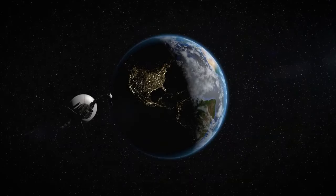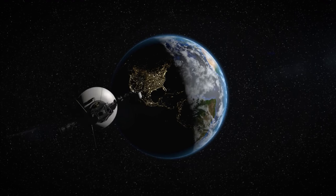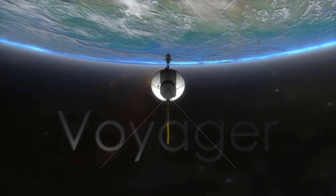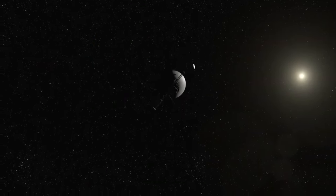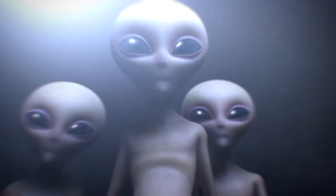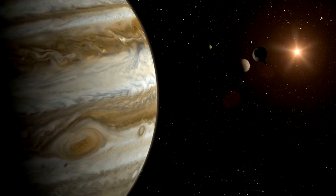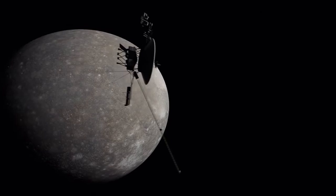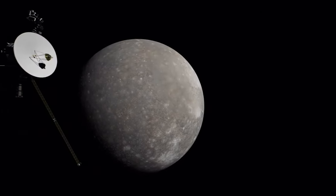Voyager 1, launched in 1977 alongside its twin Voyager 2, has been our first interstellar messenger, carrying the golden record, a time capsule meant to communicate the story of our world to extraterrestrials. For over four decades, these spacecraft have sent data back to Earth, exploring outer planets and venturing into interstellar space. Yet their mission had always been a one-way street, a broadcast from us to the universe.